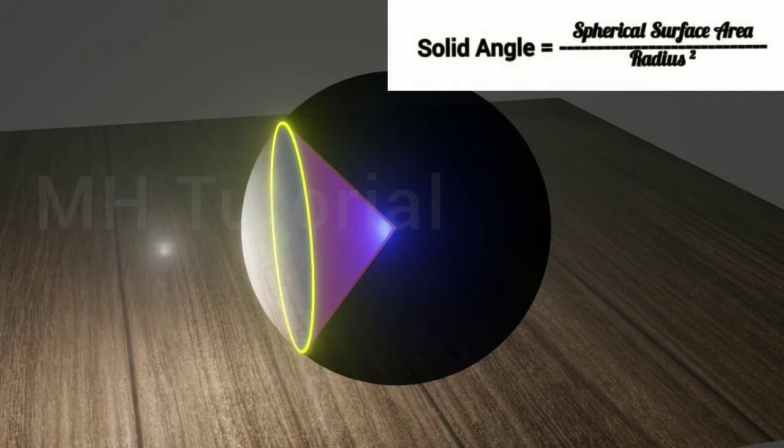Thus, we understand that ratio of surface area to the square of its radius is called a solid angle.